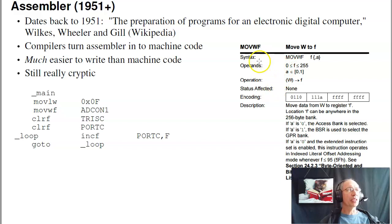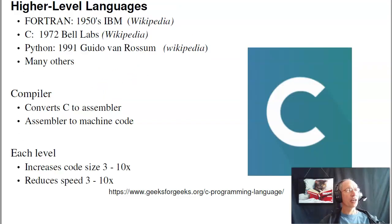The nice thing about Assembler is it's a direct match to machine code, so it compiles very efficiently. However, Assembler is really cryptic. So because of that, higher level languages were invented.